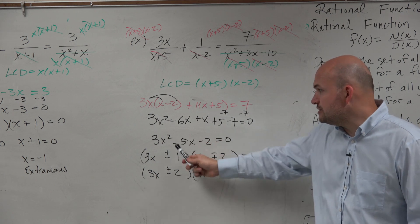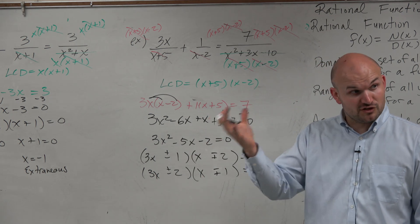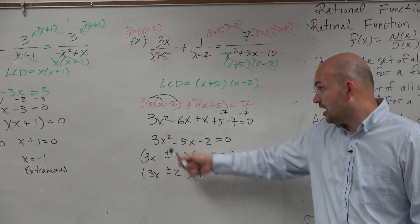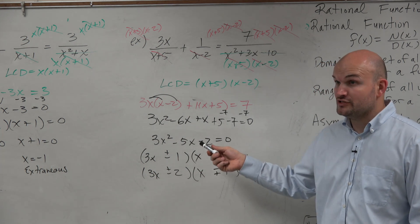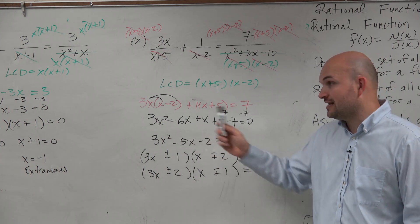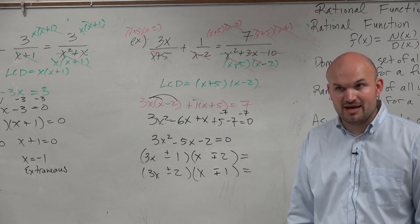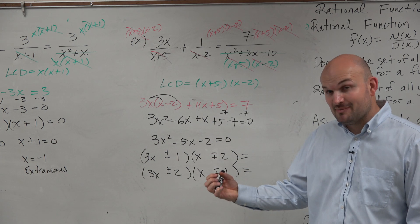So again, we know that the first, remember FOIL, first, outer, inner, last? The first always gives us 3x squared. The last always gives us negative 2. So we've got to do the outer and the inner to get negative 5x. I already know the answer. I can see it in my head. So you think about this, and you say, all right, if I need to get to negative 5,